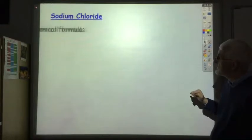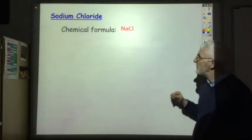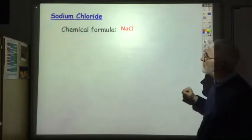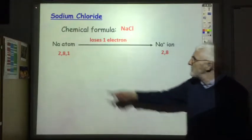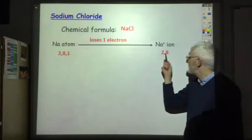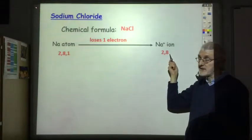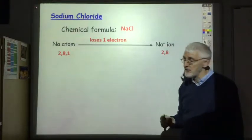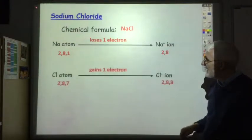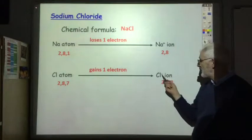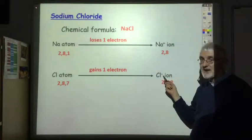Let's look at sodium chloride - chemical formula NaCl. When the sodium atom and the chlorine atom form a bond, the sodium atom loses one electron, so its electron arrangement changes from 2,8,1 to 2,8 - a full outer shell. But because it has lost an electron it is now a sodium ion with a positive charge. The chlorine gains an electron, so its electron arrangement goes from 2,8,7 to 2,8,8, and it becomes a chloride negatively charged ion.